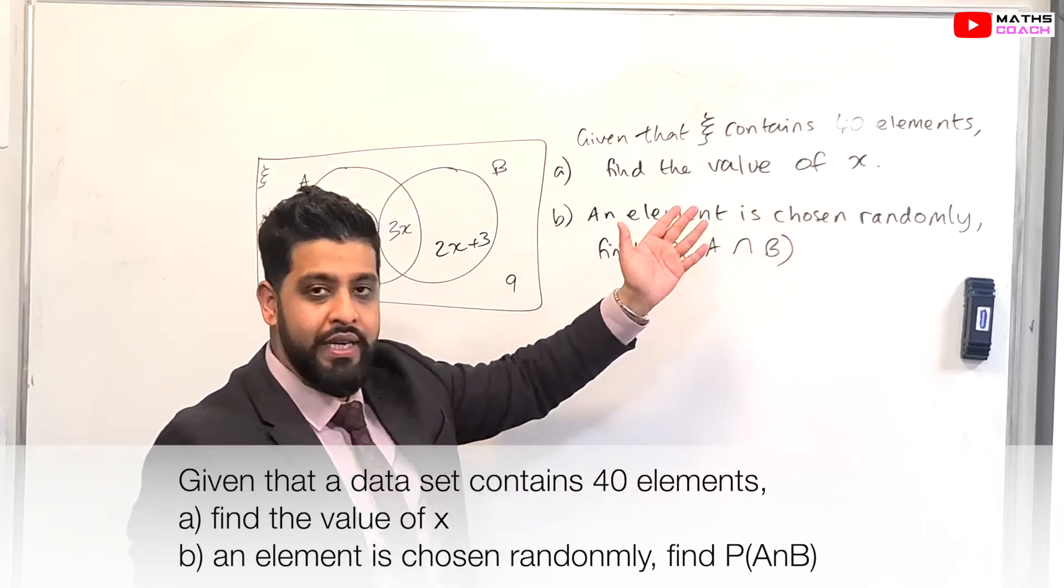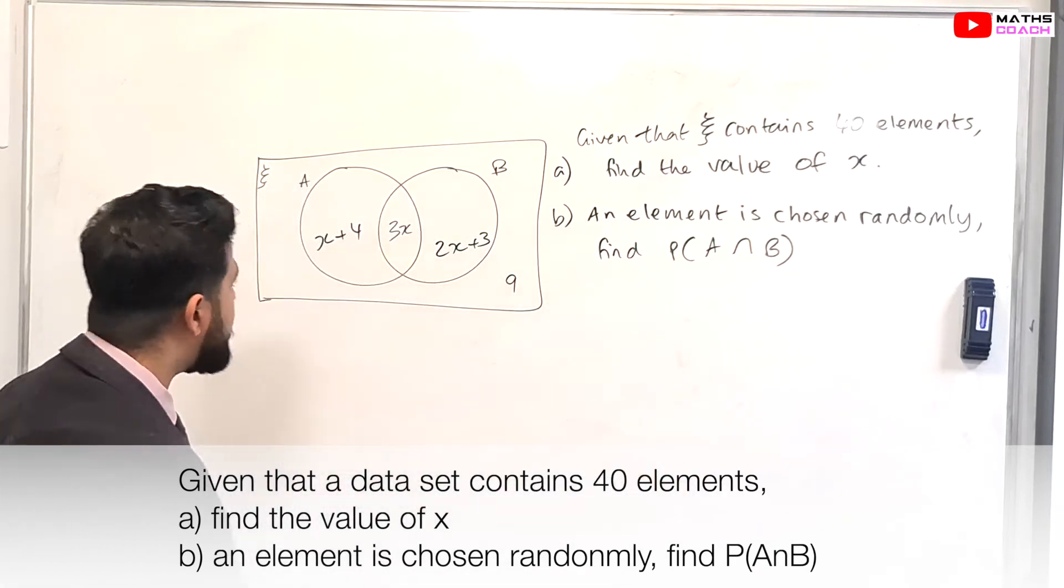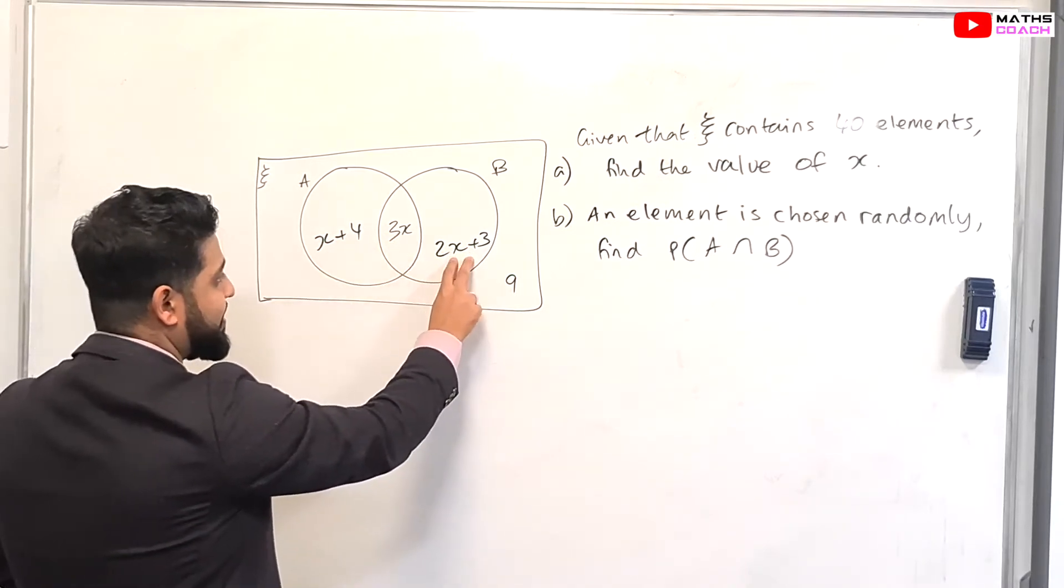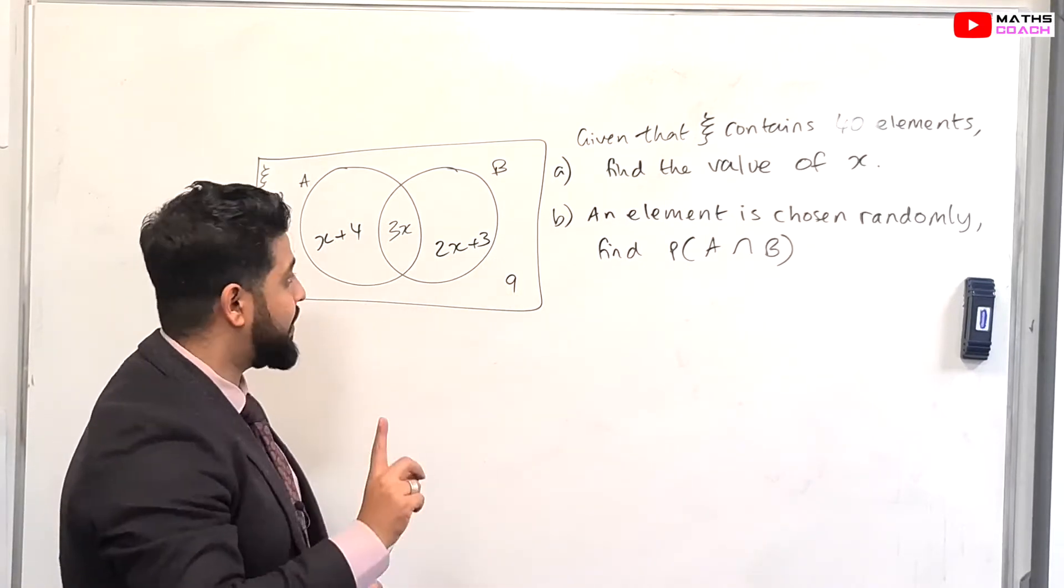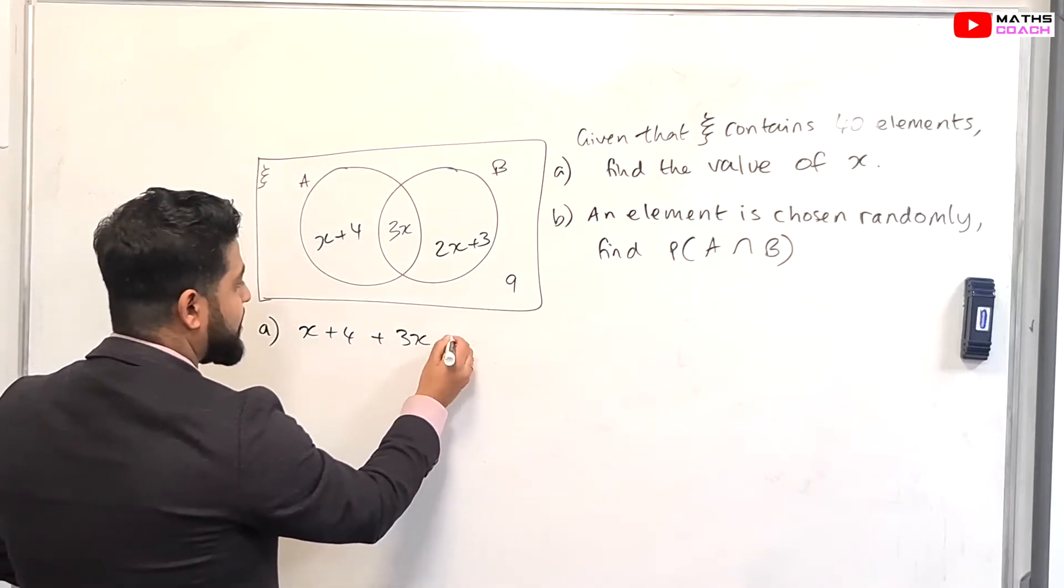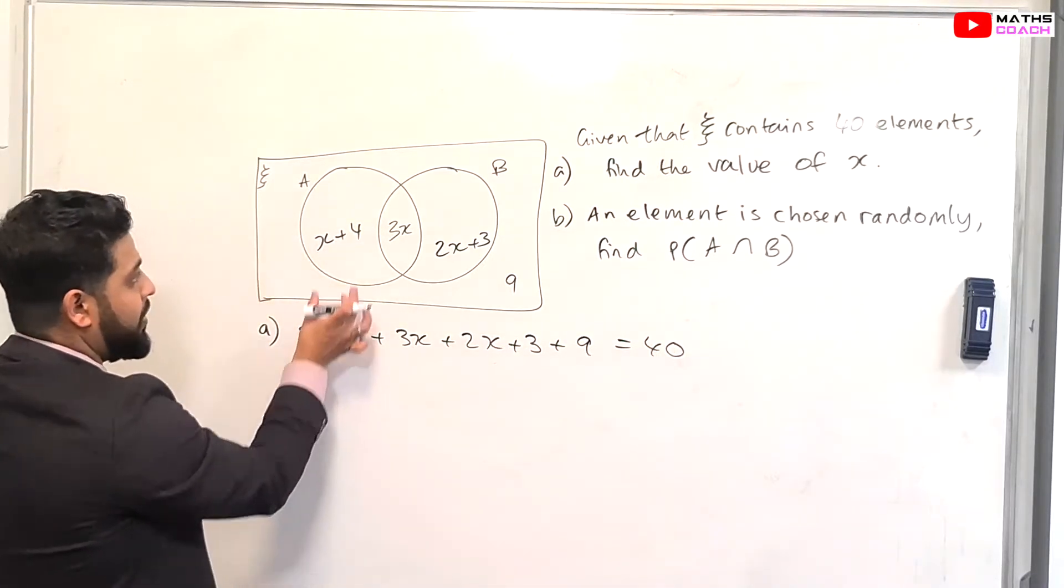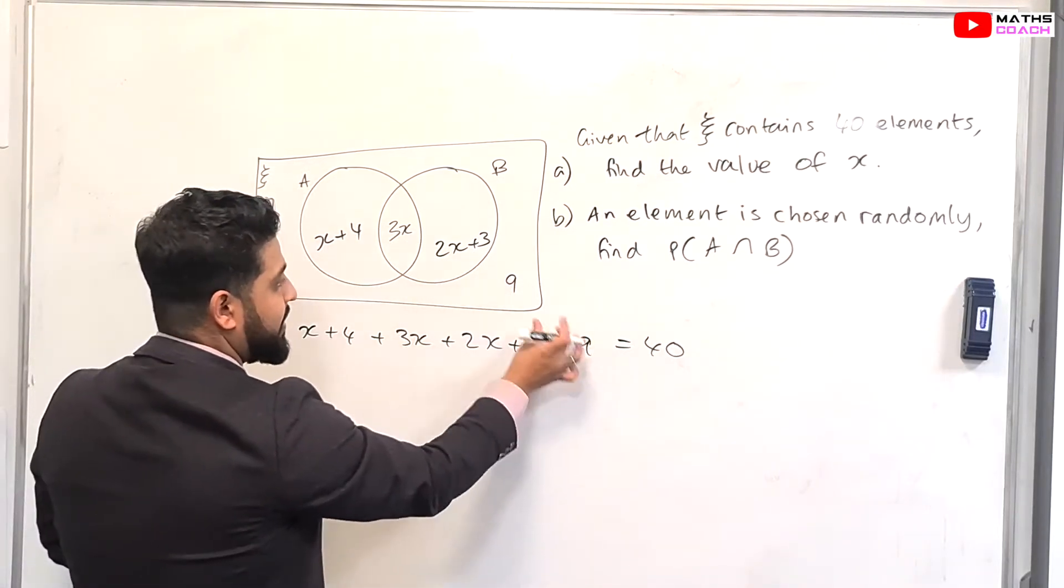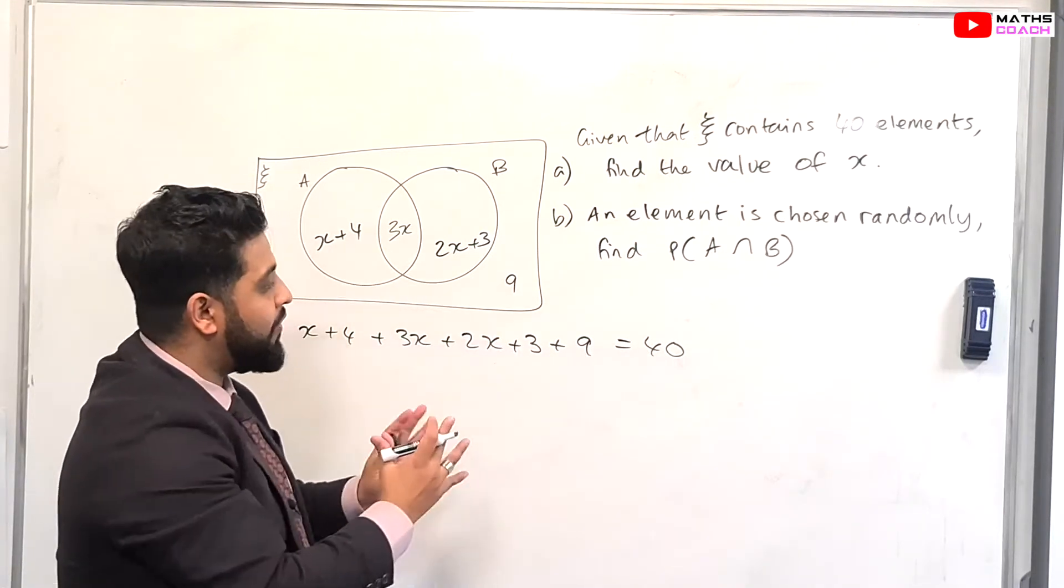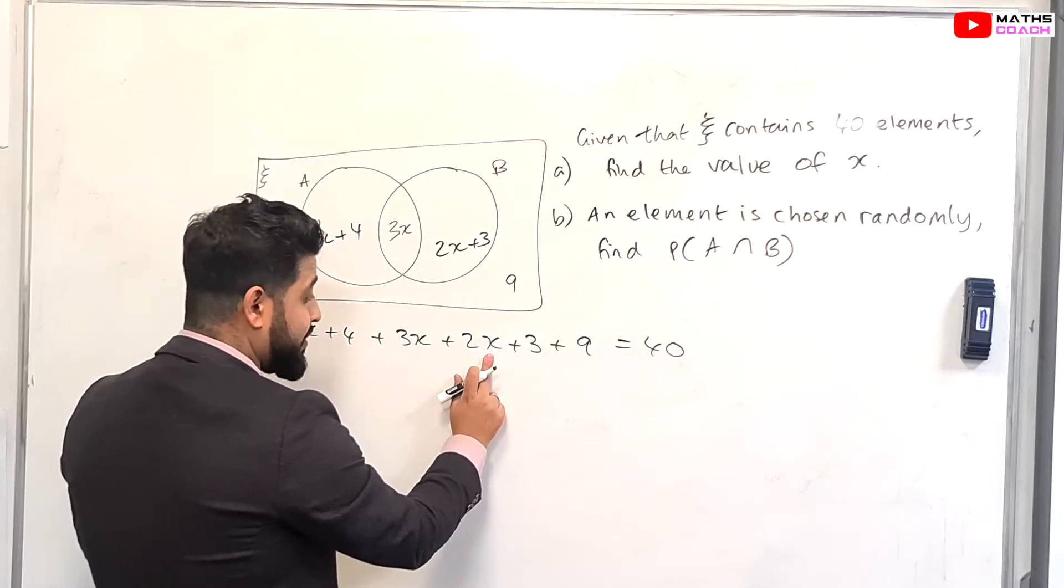Now in this part of the lesson, we will look at exclusively two questions that are specifically for the higher paper. So the question I have behind me is probably going to range at grade 6, maybe grade 7. We are given a Venn diagram which is filled in with algebra. And it says to us, given that our data set contains 40 elements, find the value of X part A. We are told for part A that this plus this plus this plus this is equal to 40. So if we write that down as an algebraic equation, so X plus 4 plus 3X plus 2X plus 3 plus 9, that equals to 40.